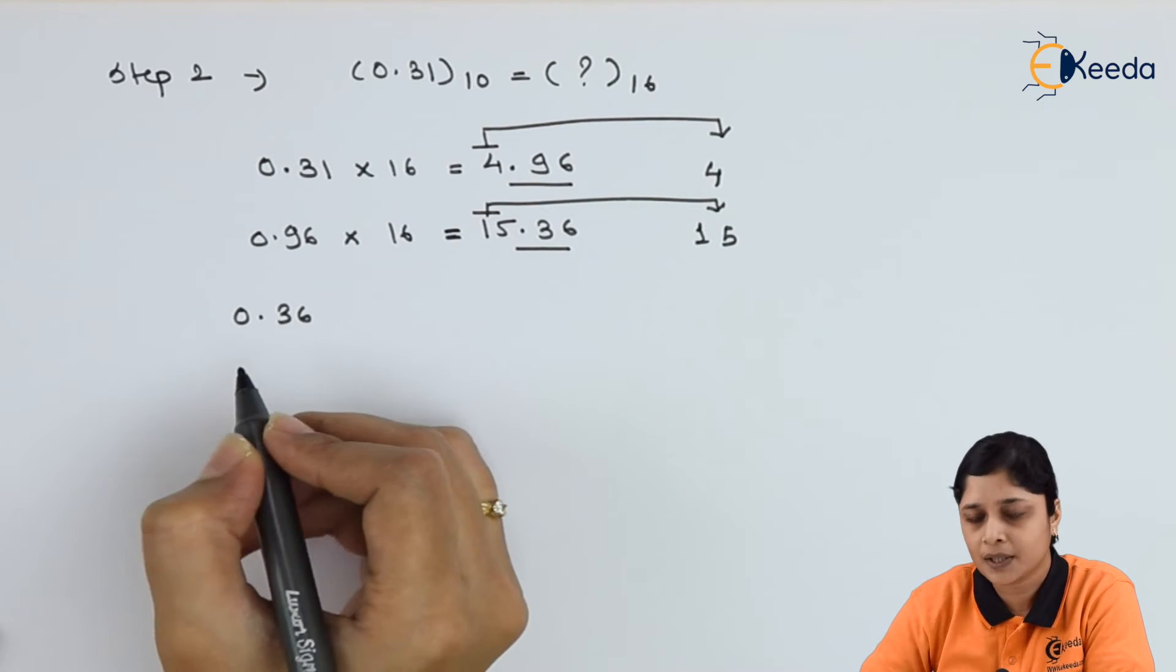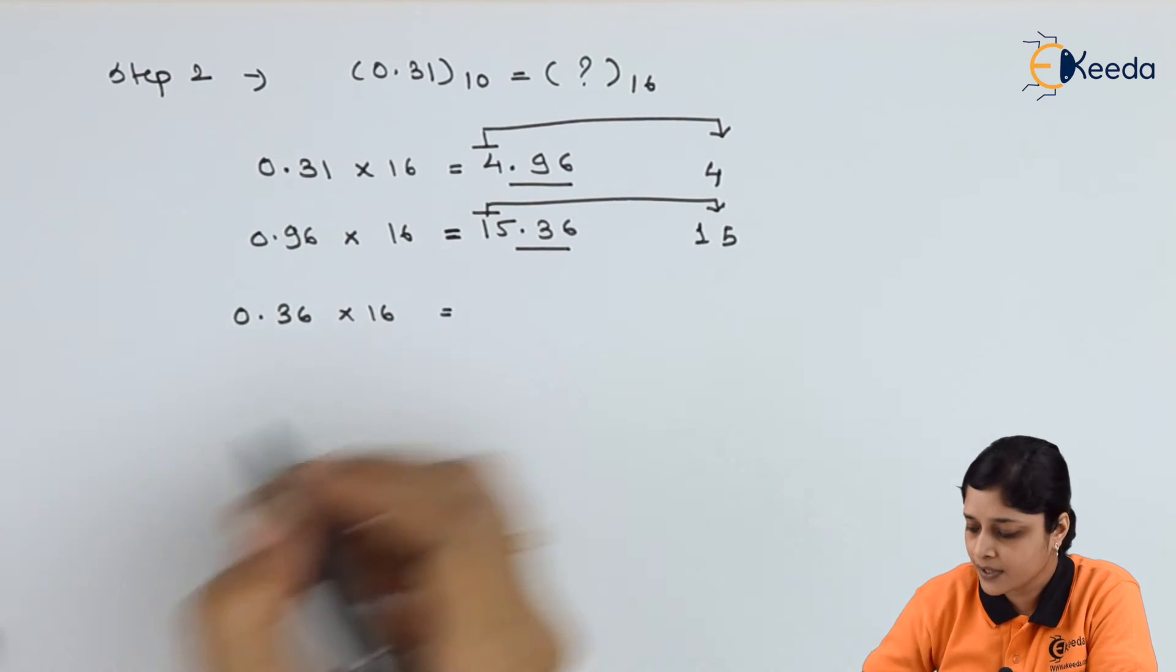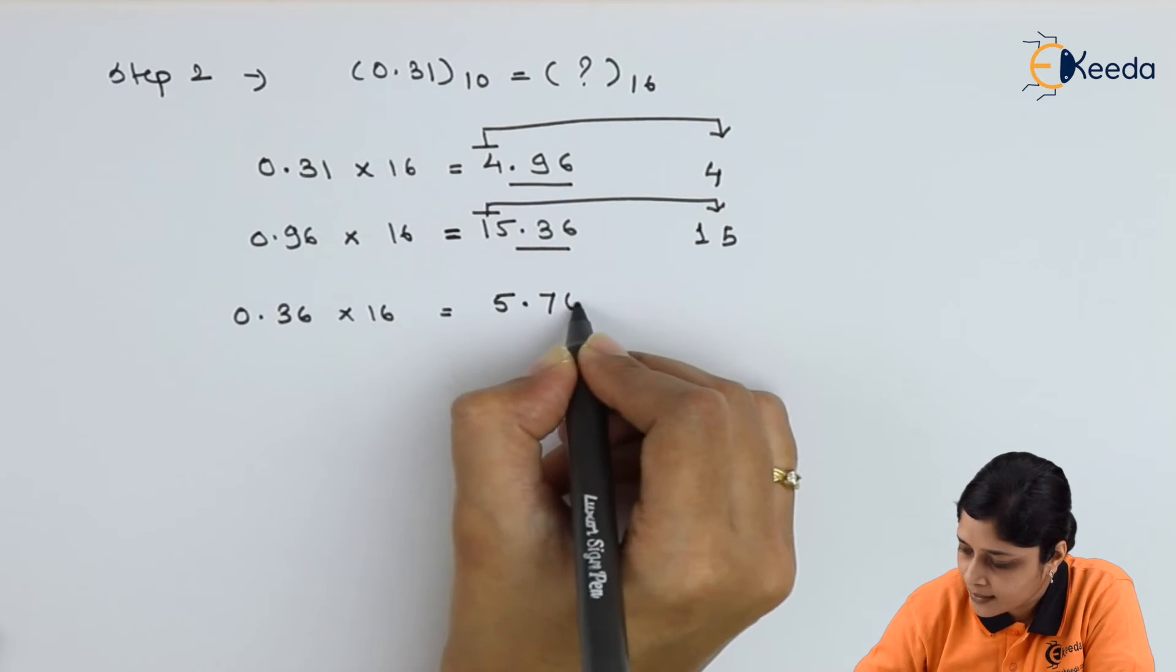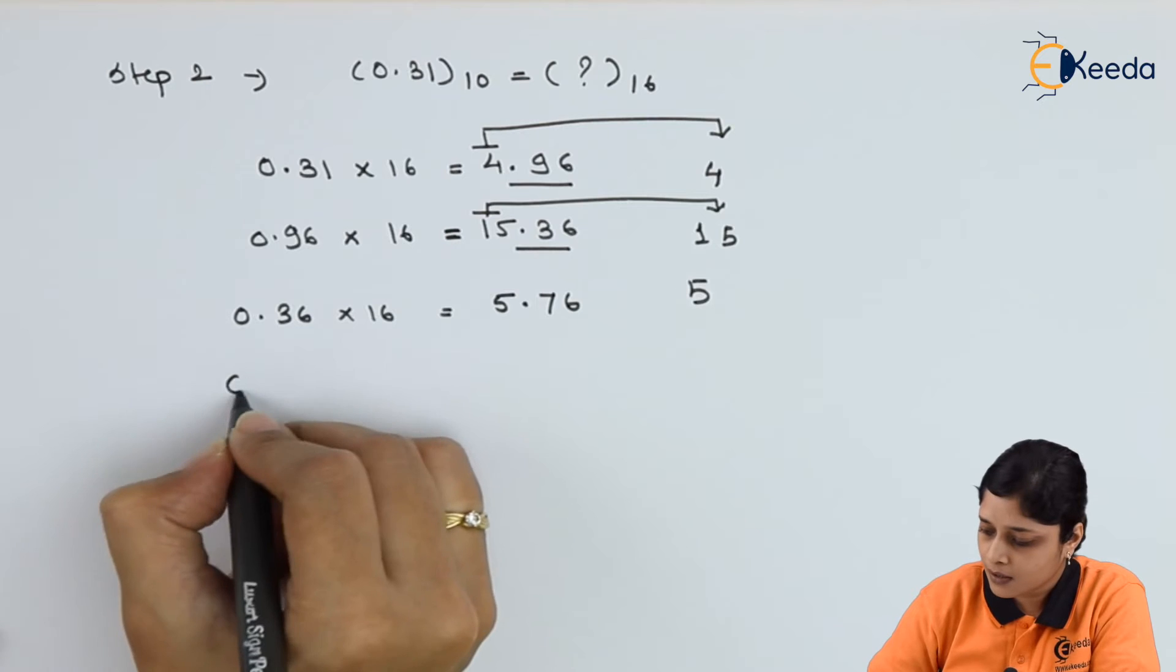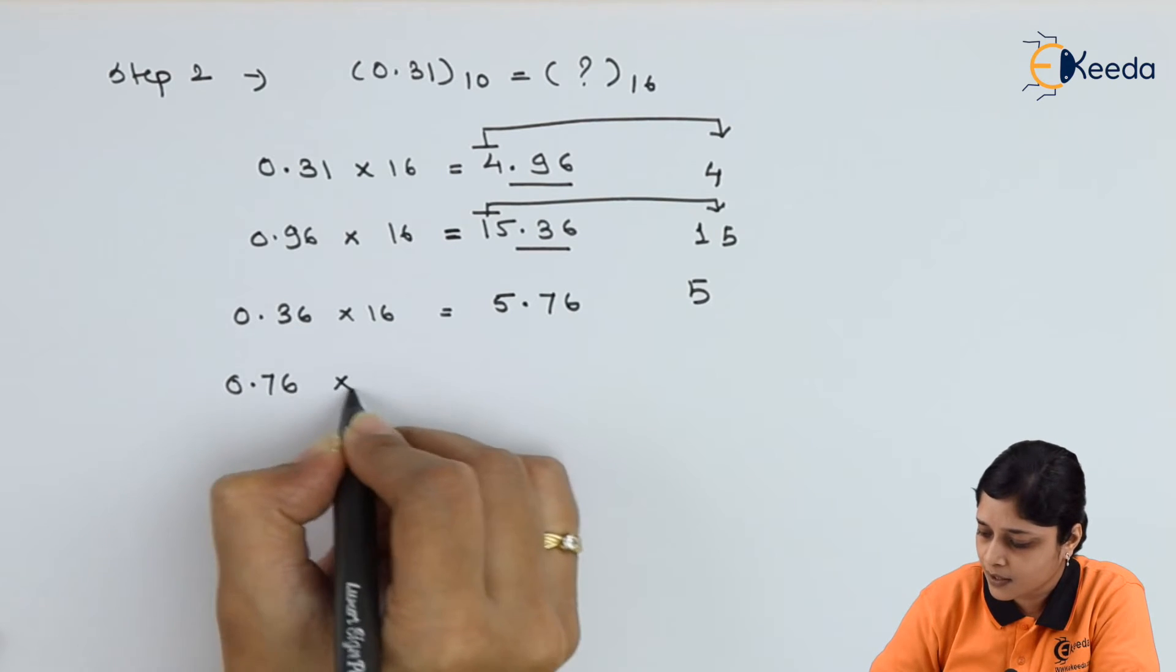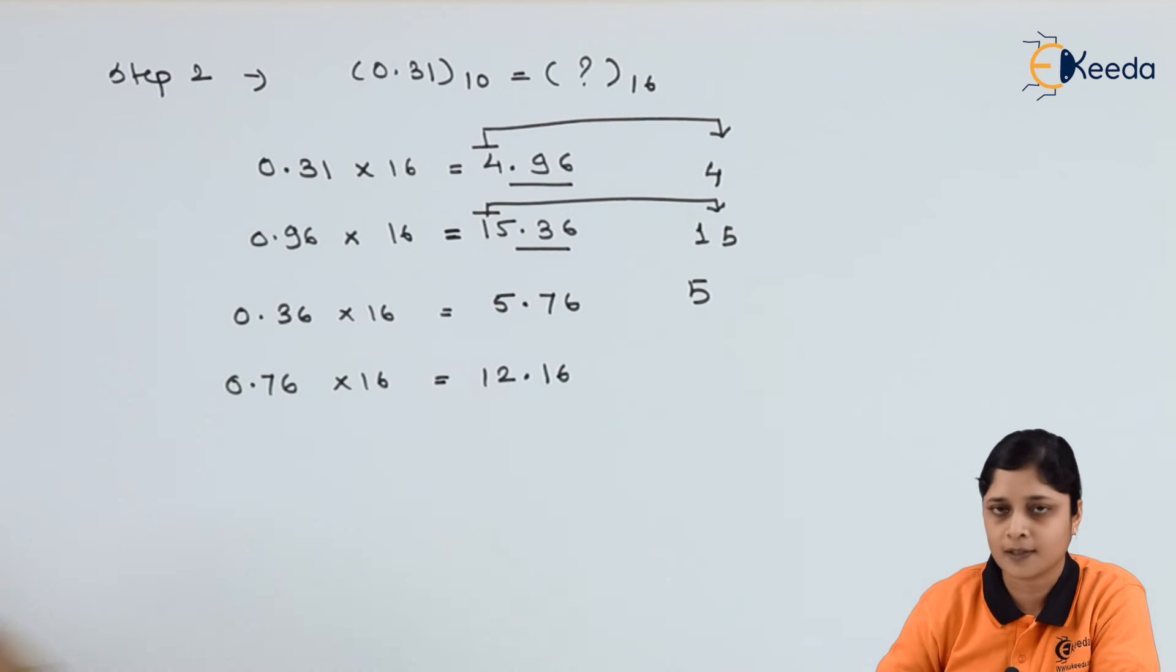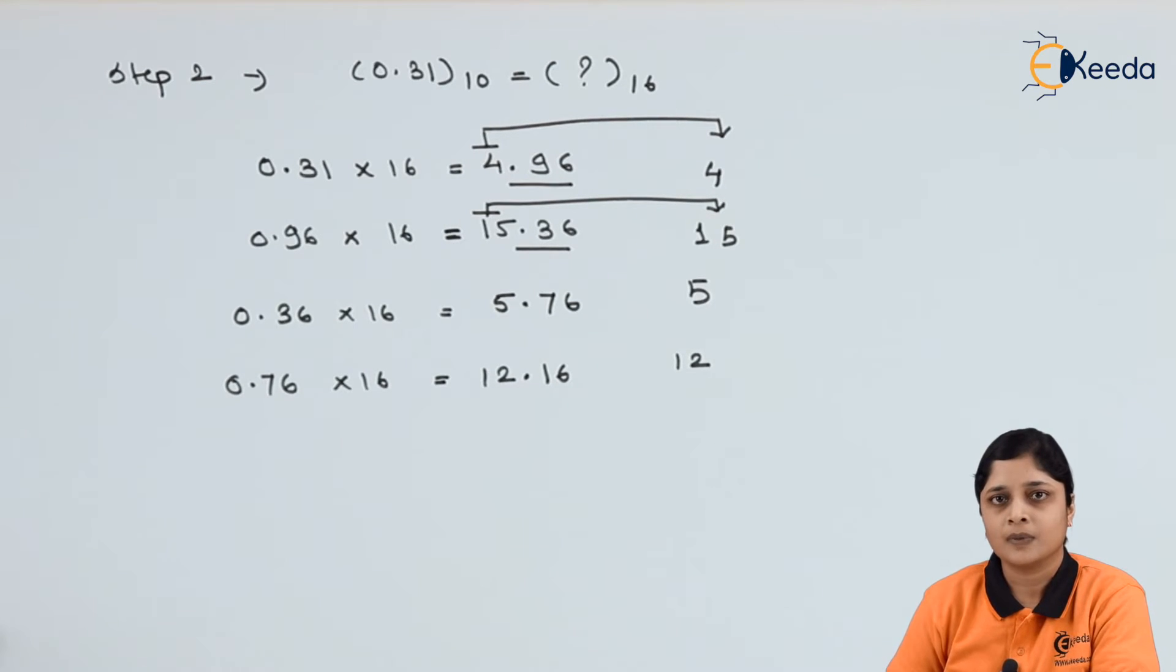0.36 into 16 will give you 5.76. Put 5 here. 0.76 into 16 will give you 12.16. Put 12 here. Up to 4 points you can write down.